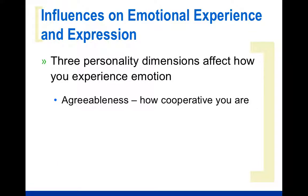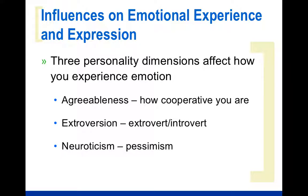Finally, there are three personality dimensions that affect how we experience emotion. Agreeability — some of us are more cooperative and willing to agree with people than others. Extroversion — how much of an extrovert or introvert you are determines how much you actually express emotion or keep it in. And neuroticism — are you a pessimist or an optimist? Do you see the world optimistically and think things are going to work out, or do you see things more pessimistically with negative outcomes?